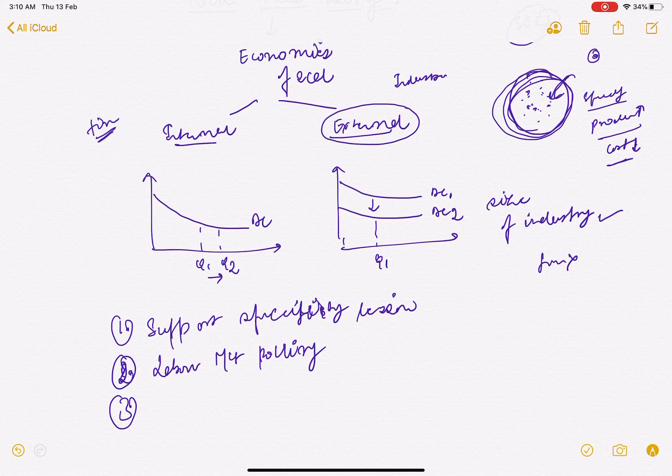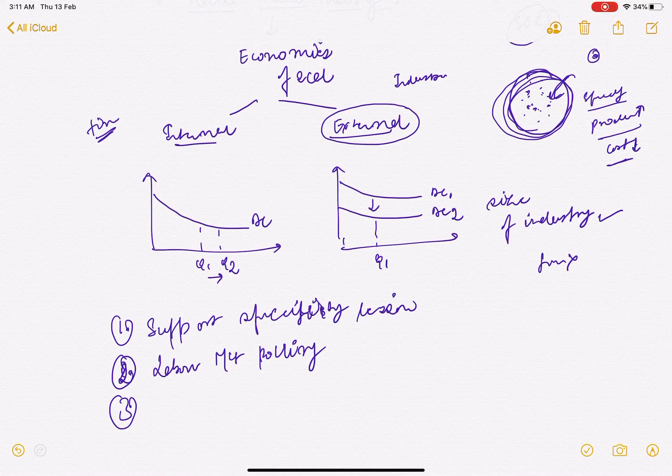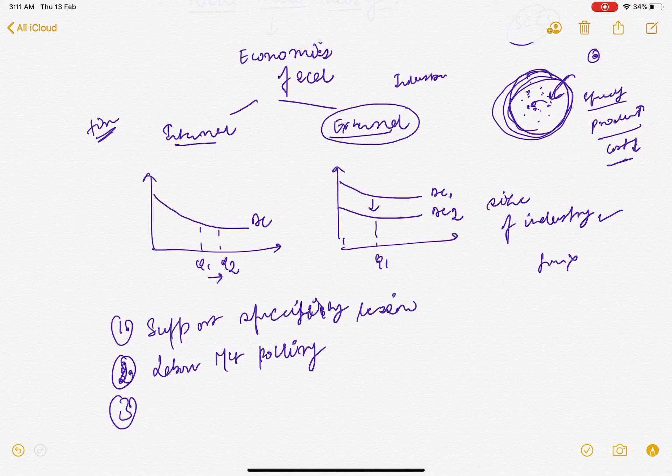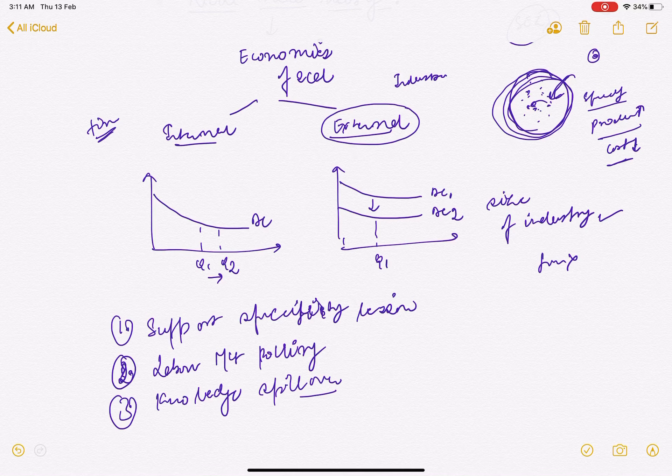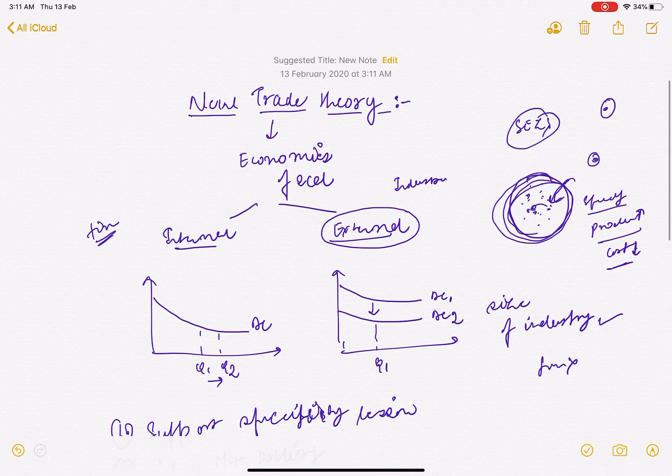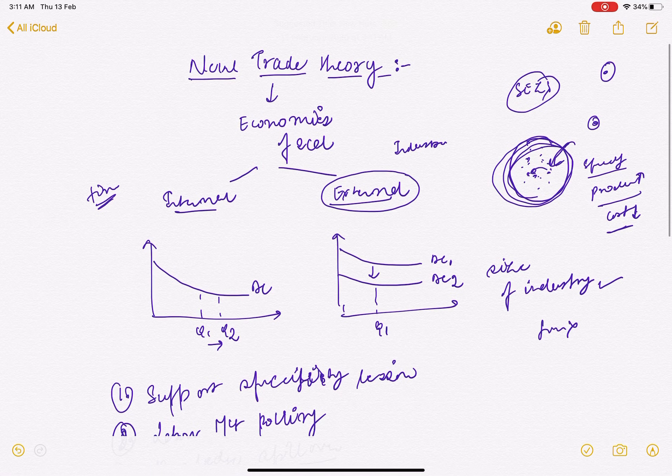Third, geographical concentration of industry promotes knowledge spillover. One firm knows, the other firm knows, the spillover is also an advantage for all the firms which are in a concentrated unit. So this was all about external economies of scale.